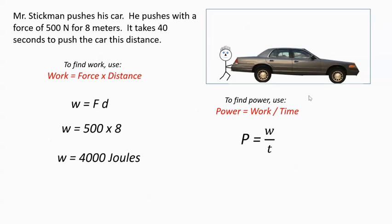Now, how much power did he have? Well, now that we have work, we can just divide by the time. It took him 40 seconds to go this distance. So we'll divide by 40. 4,000 divided by 40 is 100.